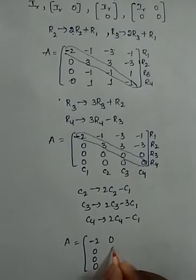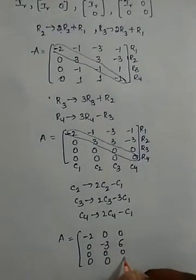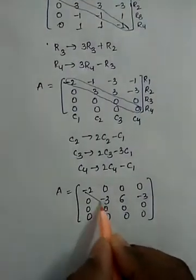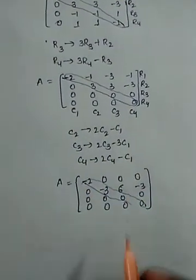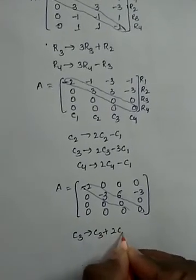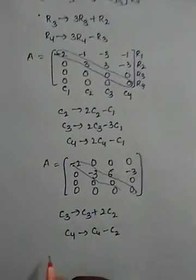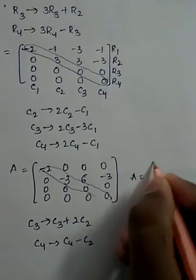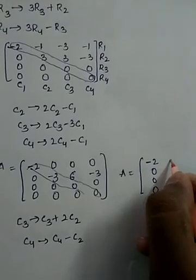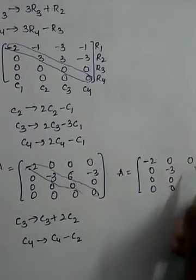So here it is minus three; next zero, next zero, next zero, next zero, next zero, next zero. Zero, zero, zero, zero, zero, zero, minus three, zero, zero, zero, zero. Next we'll try to make these two elements to zero with the help of column two. Column three becomes column three plus 2 into column two; next column four becomes column four minus column two. The two columns are the same, there is no change. Column one and column two: here it is zero, zero, zero, zero, zero, zero.